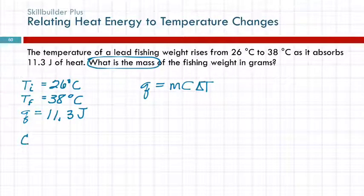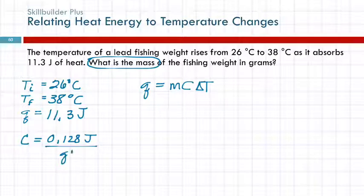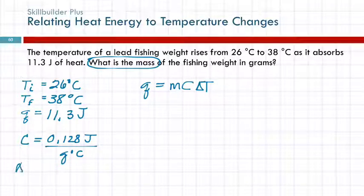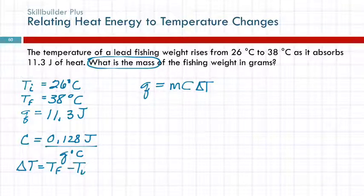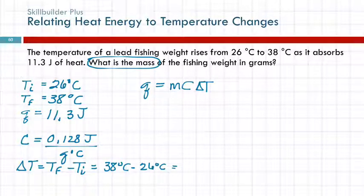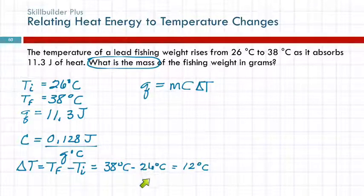So C equals 0.128 joules per gram degree Celsius. The units are important. Now this has delta T in it, not Ti and Tf, so we've got to calculate delta T. Delta T equals the final minus the initial: 38 degrees Celsius minus 26 degrees Celsius. Is that 12? Yes — 12 degrees Celsius. Subtracting each of these to the nearest 1 in the ones place, so this is also in the ones place for sig figs.